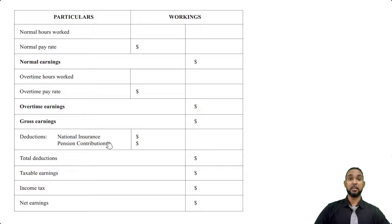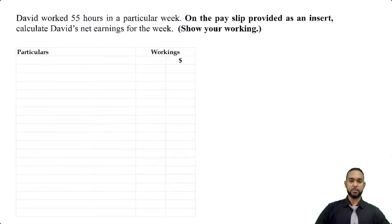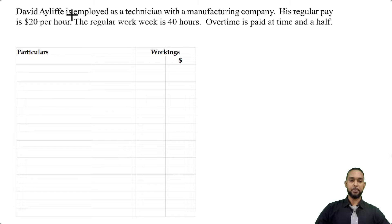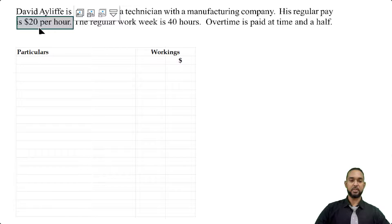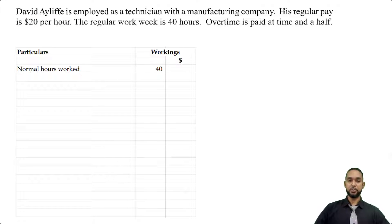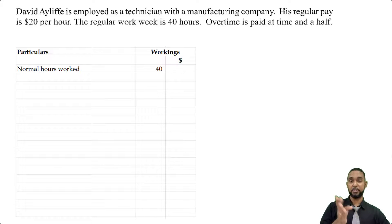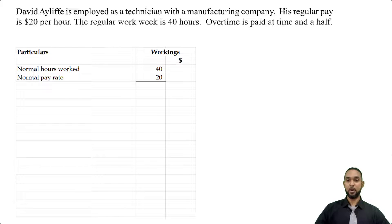Let's start populating the solution. David worked 55 hours in a particular week, but the regular work week is 40 hours and the regular pay is $20 per hour. The normal hours worked is 40, the normal pay rate is $20 per hour, so you simply multiply those two figures to get $800 — that's his normal earnings.